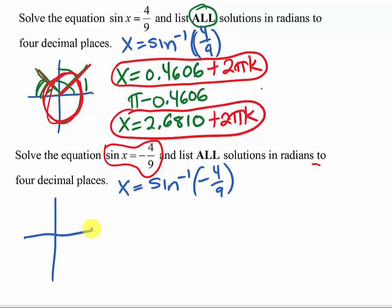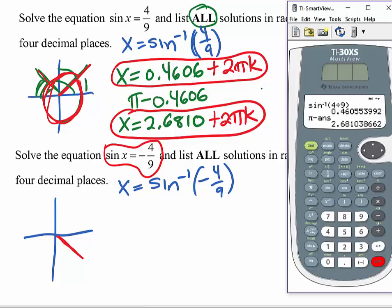And when I ask the calculator for that, since it gives me angles from -π/2 to π/2, it's going to give me something here in quadrant four. But it's going to give it to me as a negative angle, and that's okay.